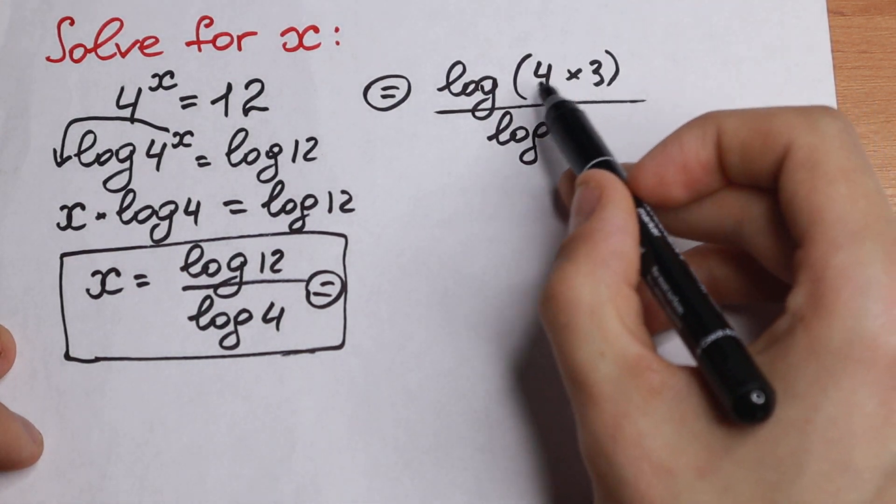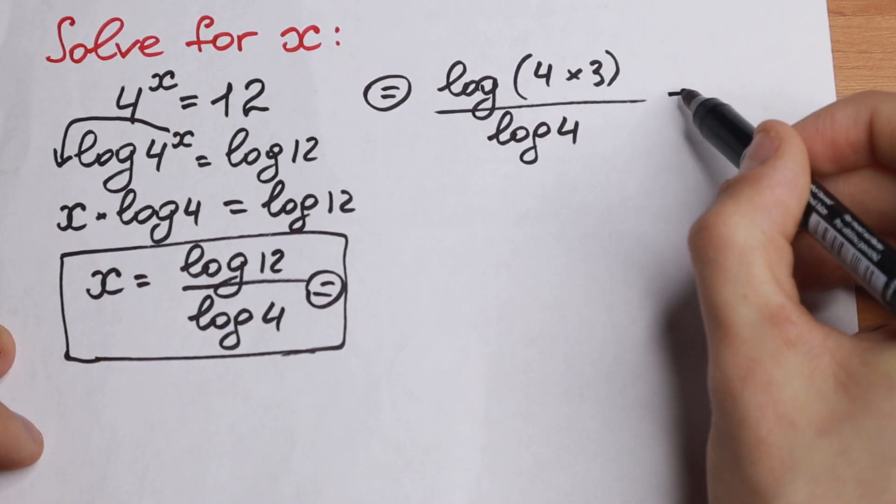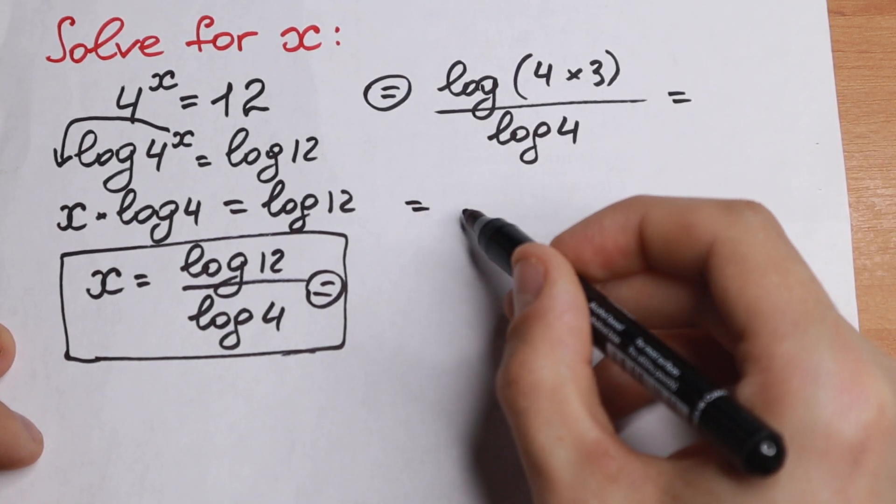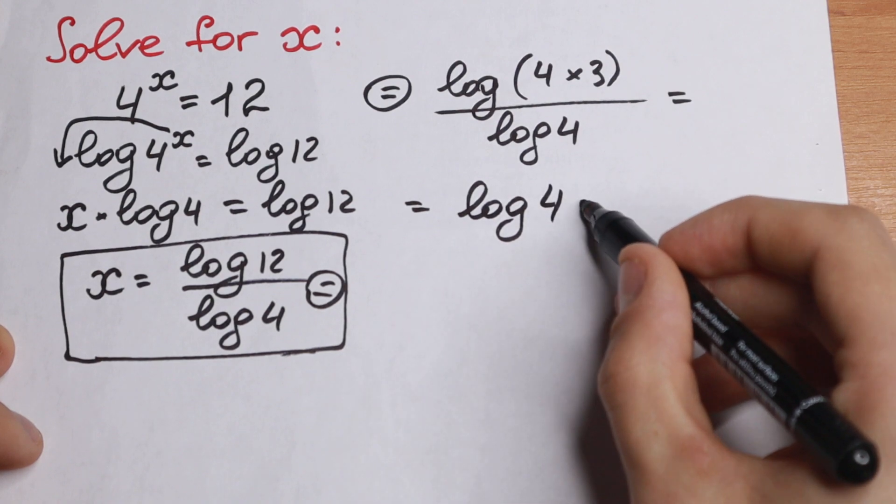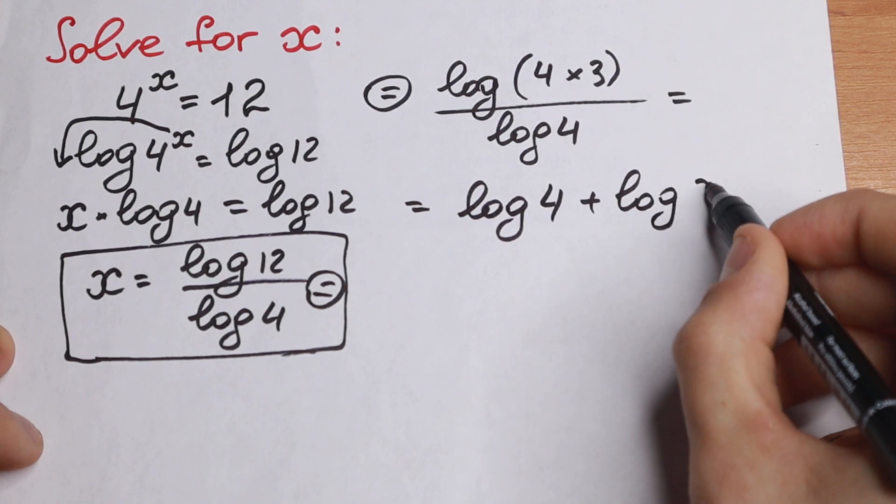We will have log in parentheses 4 times 3 over log 4. So as you can see, right now we have a product, log of a product. We know the rule that this equals log 4 plus log 3.